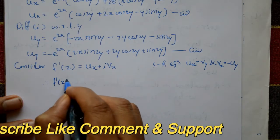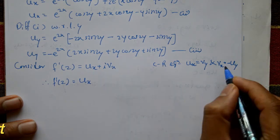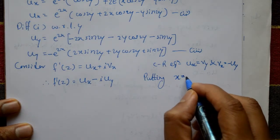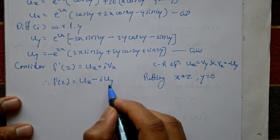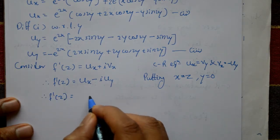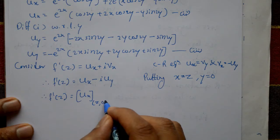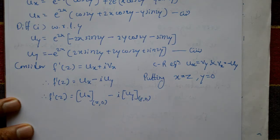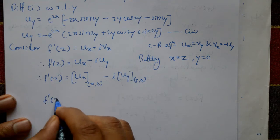Therefore f'(z) = ∂u/∂x - i·∂u/∂y. Next, put x = z and y = 0 in equations 2 and 3. So f'(z) = ∂u/∂x evaluated at x=z, y=0, minus i times ∂u/∂y evaluated at x=z, y=0. Substitute into equations 2 and 3.